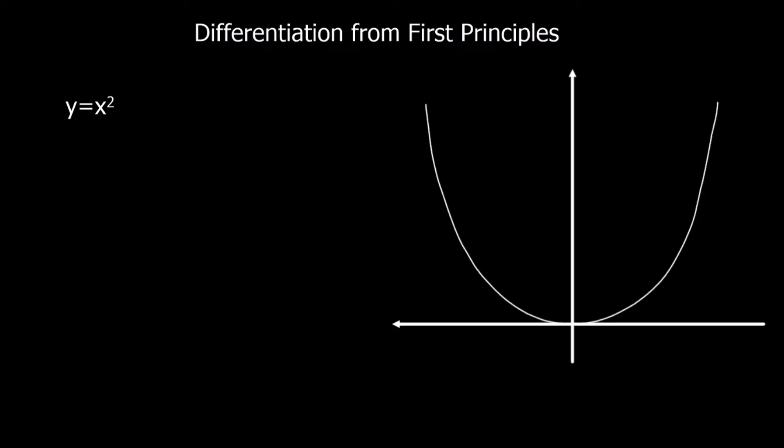In this video, we're going to look at differentiation from first principles. We've got the graph of y equals x squared, and we want to work out the gradient at a point on y equals x squared.